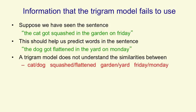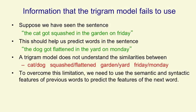In particular the trigram model doesn't understand the similarities between words like cat and dog or squashed and flattened or garden and yard or Friday and Monday. So it can't use past experience with one of those words to help it with the other one. To overcome this limitation what we need to do is convert the words into a vector of semantic and syntactic features and use the features of previous words to predict the features of the next word.